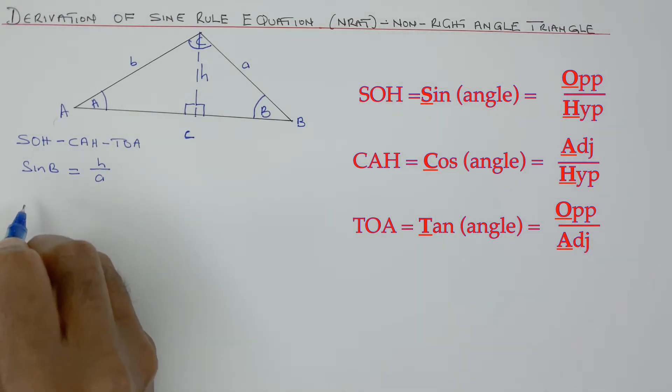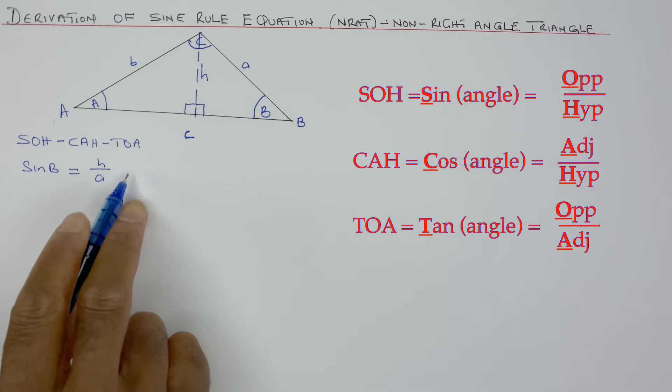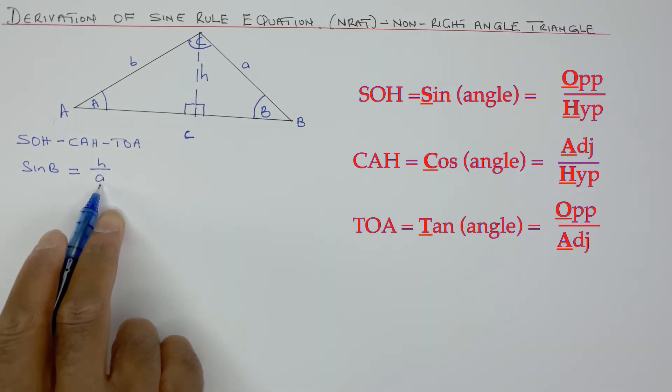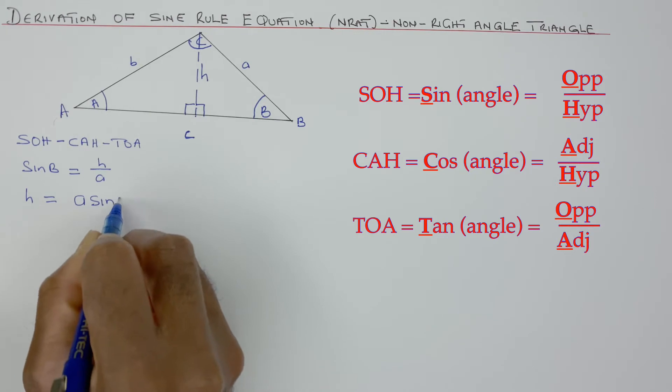Now, I can find H. That means I can make H the subject by multiplying both sides of this equation by A. That A will cancel that A. So H will become A sine of B.